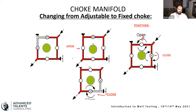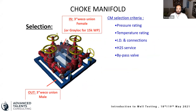Every time the chokes are changed, we must inspect the tip of the adjustable stem for damage from sand, high flow rates, or vibration. Selection criteria for choke manifolds include pressure rating — 5,000, 10,000, 15,000, or even 20,000 PSI — temperature rating, and internal diameter (ID) and connections. A smaller ID cannot handle higher rates; for very high rates you need a bigger ID choke manifold — three inches or even up to six inches or higher.